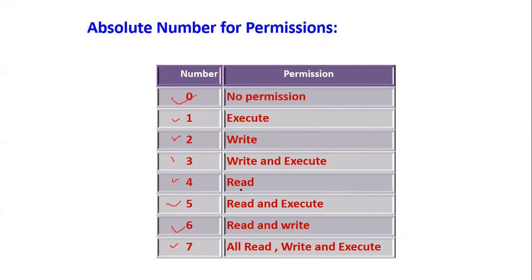So similarly, read is 4, write is 2, execute is 1. Combinations: write and execute is 2 plus 1 equals 3; read and execute is 4 plus 1 equals 5; all permissions is 4 plus 2 plus 1 equals 7. These are the octal numbers used to represent permissions. So this is how the permissions are mentioned in absolute mode using these octal values.